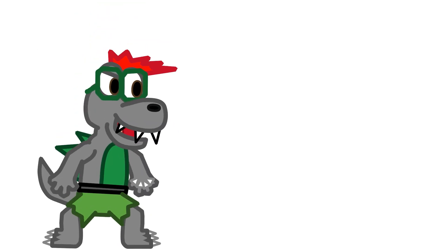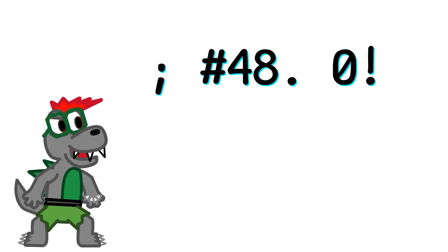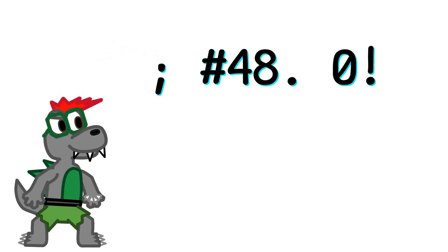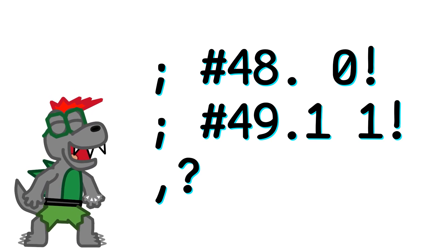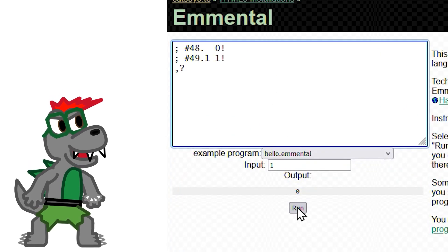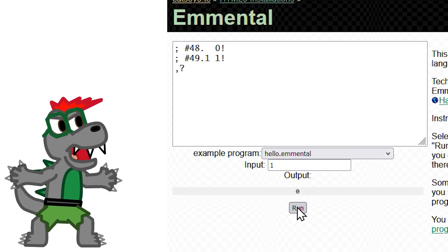Okay, I'll take it from here. Zero will put 48 — the ASCII for zero — on the stack and print it. One will put 49 on the stack, print that, then call one again. Simple, easy, I got this! Okay, now just gotta run it, and... Huh?